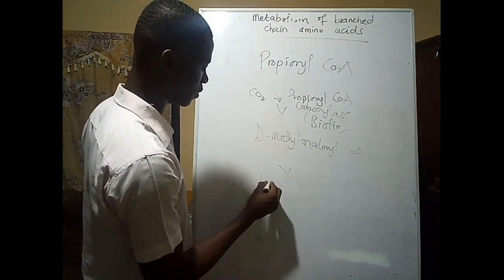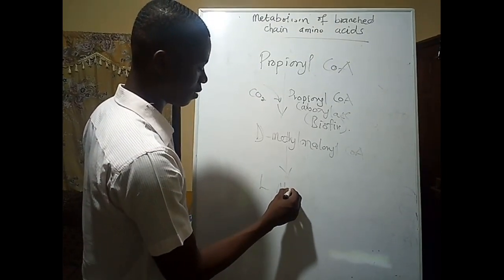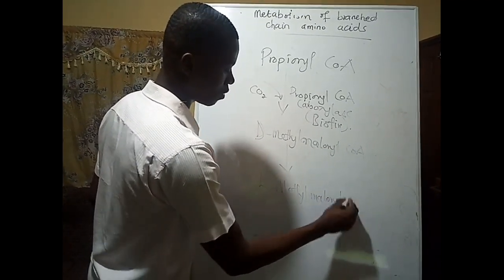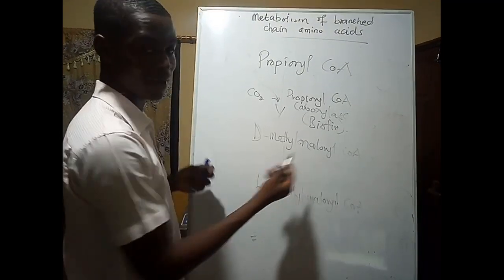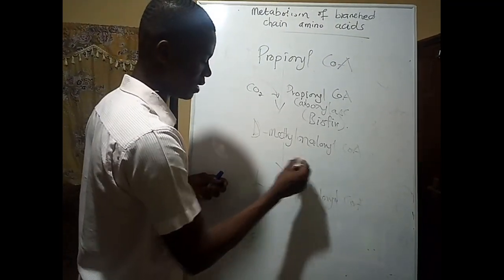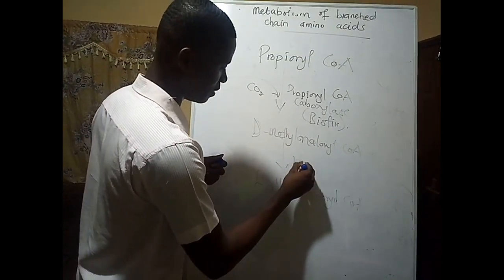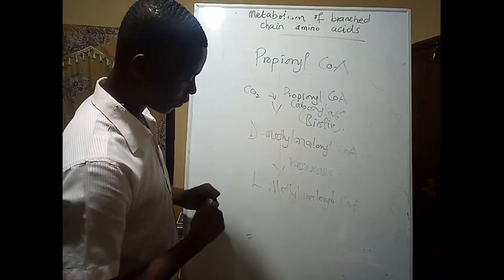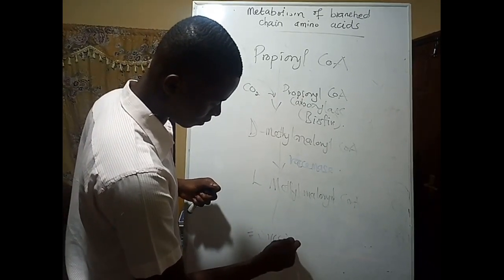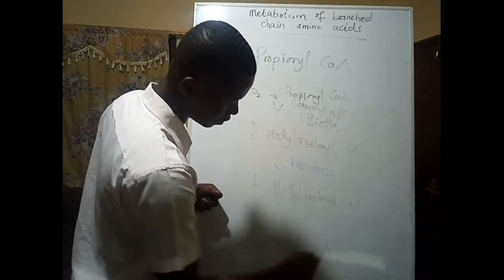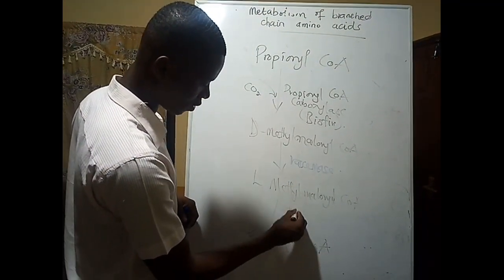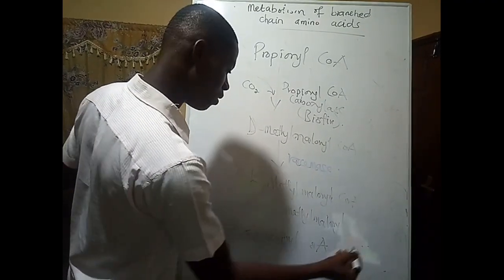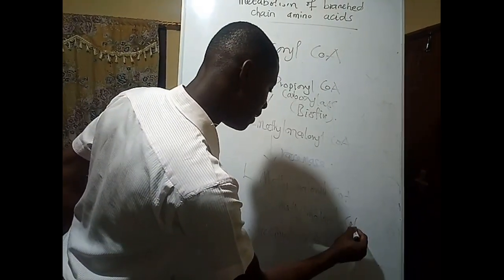The D-methylmalonyl-CoA is converted to L-methylmalonyl-CoA by an enzyme called methylmalonyl-CoA racemase. Then, finally, L-methylmalonyl-CoA is converted to succinyl-CoA by an enzyme called methylmalonyl-CoA mutase.